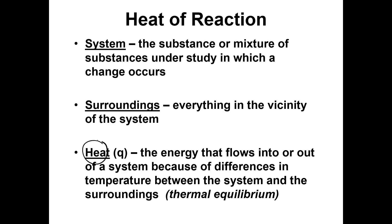What we're interested in is heat, and we're going to abbreviate heat as Q — the energy that flows in or out of the system. There is thermal equilibrium, where you have heat flowing in and out until equilibrium is reached. For example, put an ice cube in water: the ice warms up and the water giving off heat cools down. Heat flows from the warmer water to the ice cube, and at some point it reaches an equilibrium temperature. That's thermal equilibrium.